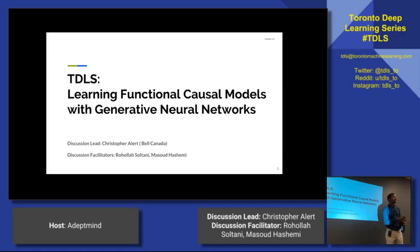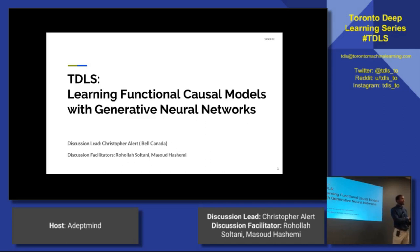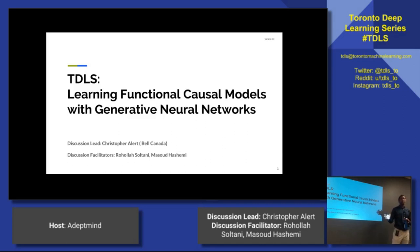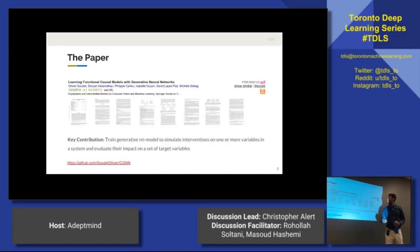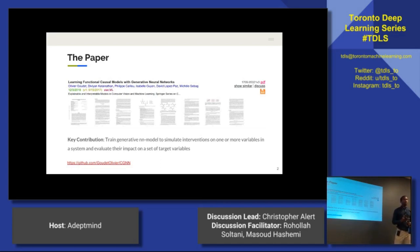If you look at classical statistics and classical inference, you look at the conditional probability — the times that you see some outcome given some input. But in causal inference, you're trying to go a step further: if I could make it snow tomorrow, would I still be working on slides? The key contribution of the paper I'm presenting today was applying neural networks and building a generative model that will allow you to simulate interventions on one or more variables in a system and evaluate their impact on a set of target variables.